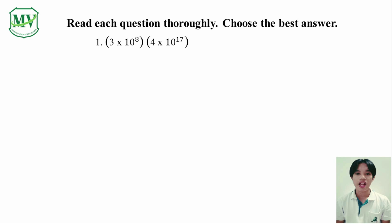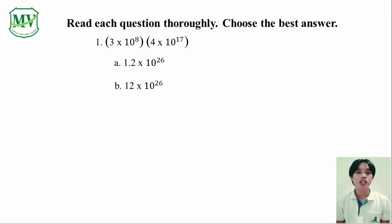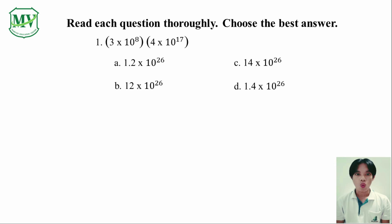A: 1.2 times 10 raised to the power of 26. B: 12 times 10 raised to the power of 26. C: 14 times 10 raised to the power of 26. And D: 1.4 times 10 raised to the power of 26.